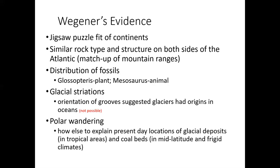Then there was polar wandering — either the continents had to move, or the poles moved. We know the magnetic pole changes location, but not enough to explain tropical swamps once existing in Siberia and Wyoming, or glaciers in South Africa. So Wegener's hypothesis was that the continents had drifted — not that the poles had wandered. This started a firestorm of criticism for the man.